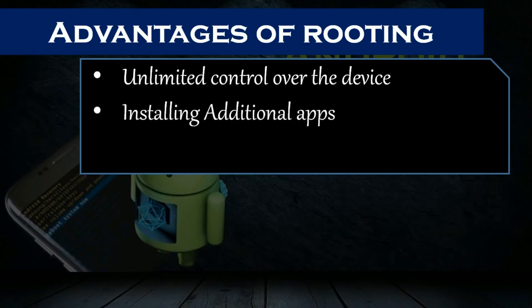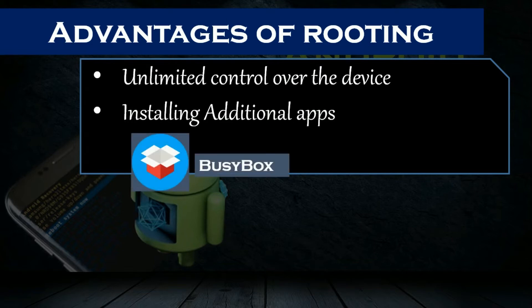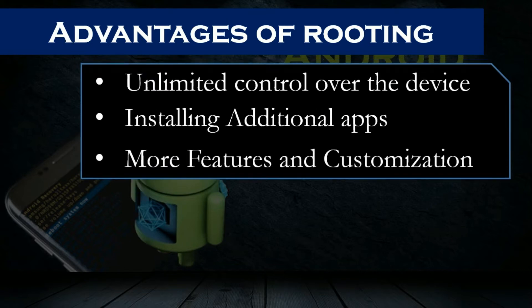Installing additional apps: users with root access on the device can install some apps with special features, popularly known as root apps. For example, BusyBox is an app that provides more useful Linux commands that are not available on an Android device by default. More features and customization: by installing custom recovery and custom ROMs on an Android device, we can have better features and customization than that provided by the vendor's stock OS.